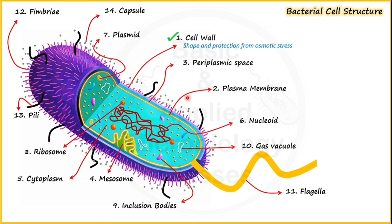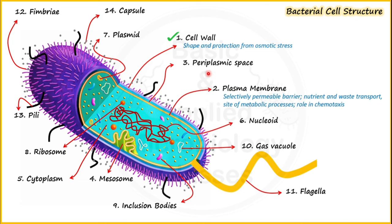Now let's talk about the plasma membrane — the innermost layer surrounding the bacterial cell. Just like in other cells such as animal and plant cells, the plasma membrane acts as a selectively permeable barrier and monitors nutrient and waste transport. Secondly, the plasma membrane in bacteria is also a site of important metabolic processes like respiration and photosynthesis, and it plays an important role in chemotaxis — whether a particular bacteria should be attracted toward or move away from a particular chemical.